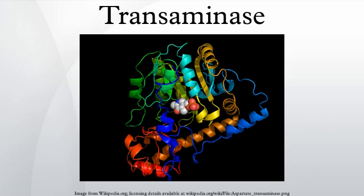Some transamination activities of the ribosome have been found to be catalyzed by so-called ribozymes, examples being the Hammerhead ribozyme, the VS ribozyme, and the Hairpin ribozyme. The transaminase enzymes are important in the production of various amino acids, and measuring the concentrations of various transaminases in the blood is important in diagnosing and tracking many diseases.